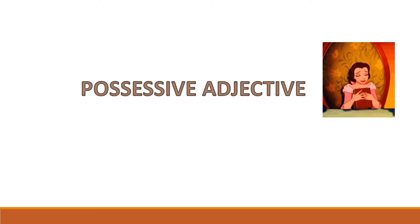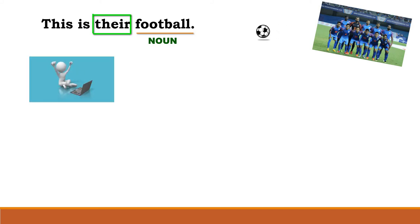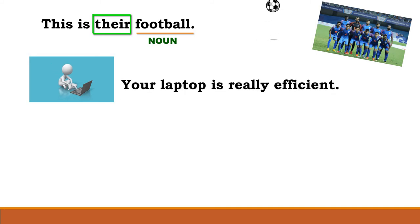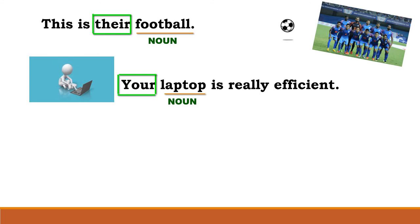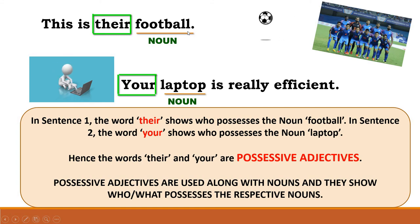Now we come to the last type: possessive adjective, which shows possession or belongingness. 'This is their football.' Football is the noun and their is the adjective, showing possession. 'Your laptop is really efficient.' Laptop is the noun and your shows whose laptop it is. So their and your are possessive adjectives. They are also used along with nouns — the nouns must immediately follow them. This is absolutely essential for these last three types.